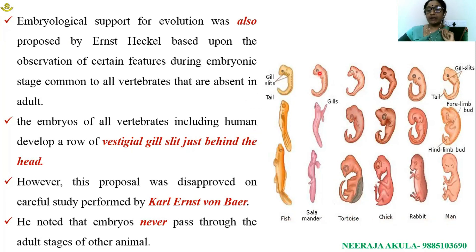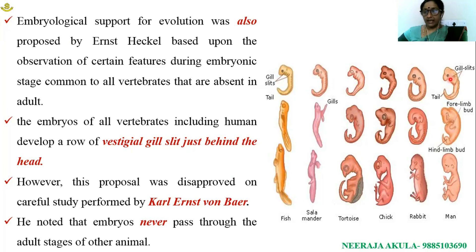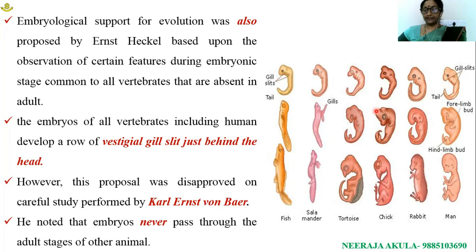This was practically disapproved by Karl Ernst von Baer, who studied developmental stages of vertebrates including fish, salamander, tortoise, chick, rabbit, and man. He observed that common characters appear first, and as embryonic development progresses, variations are seen between developing embryos. The gill slits are seen in fish embryos, but the embryo does not resemble the adult fish. So von Baer practically disapproved the theory proposed by Ernst Haeckel.